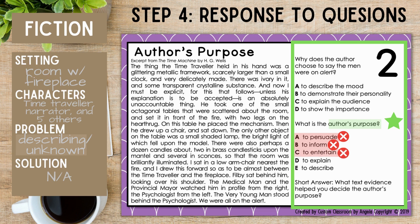Option C, to entertain — this is also incorrect because there's really no excitement. There's a little bit of suspense about what's to happen next, but that's not the overall point. Option D, to explain, and option E, to describe, are closely related. To explain means to make an idea clearer by describing in more detail or giving more facts. To describe means to give lots of details to paint a verbal picture of what is happening. So D, to explain, is really incorrect since we're not learning more about an idea. The best answer is E, to describe, since the passage is overall trying to vividly paint a picture of what's happening in this room.